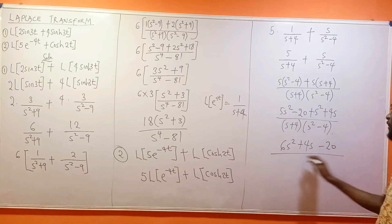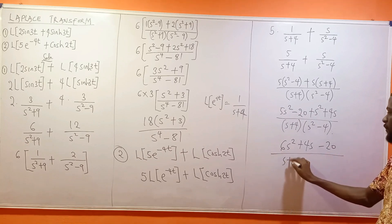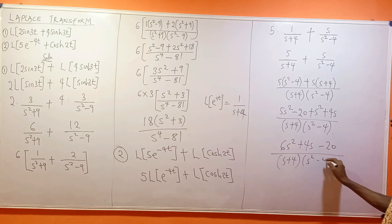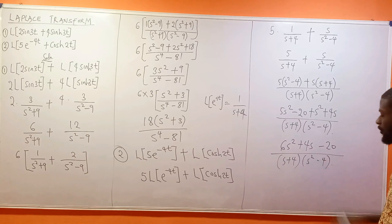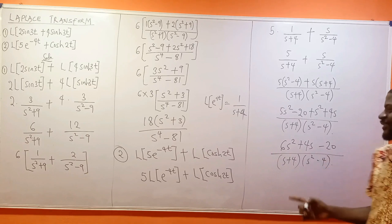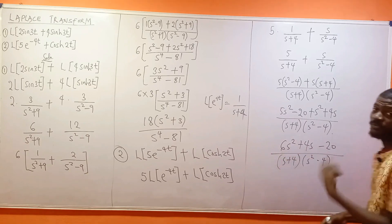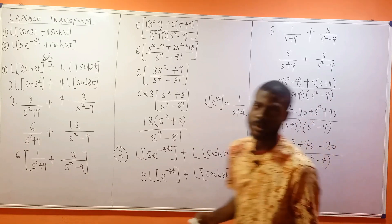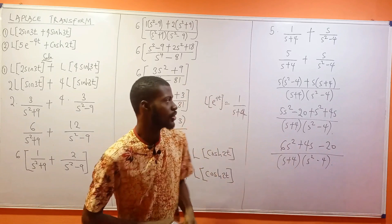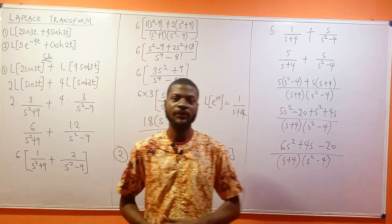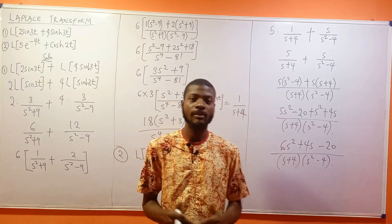So 5s² plus s² gives 6s², plus 4s, minus 20, all divided by (s + 4)(s² - 4). You can also factorize the numerator if you wish. That concludes both problems. Thank you very much.